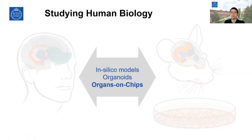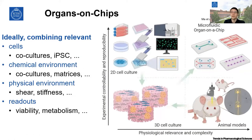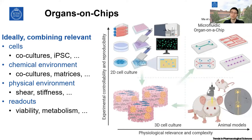Some new technologies are trying to bridge this gap. The first are so-called in silico models, which use computer modeling and existing knowledge about drugs to predict outcomes. Then there are organoids and advanced cell culture models. And lastly, organs-on-chips, which is what I'll be talking about. Organs-on-chips are supposed to combine relevant cells, relevant environments — both physically and chemically — and relevant readouts in a single engineered package with small microfluidic channels, where we can really control the environment in a very targeted manner.